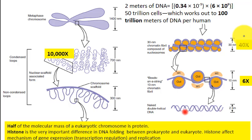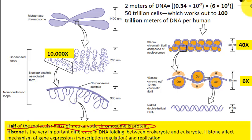So this DNA has to fold into a very compacted structure. For that matter, folding is very important. You can see that half of the molecular mass of a eukaryotic chromosome is protein. So we need to know about certain proteins required in folding, and histone is a very important protein required to fold this whole DNA.